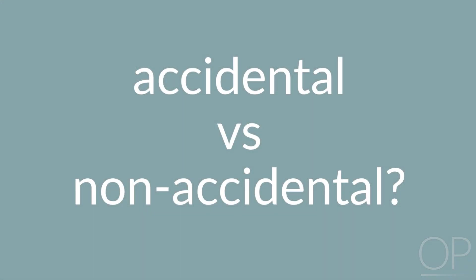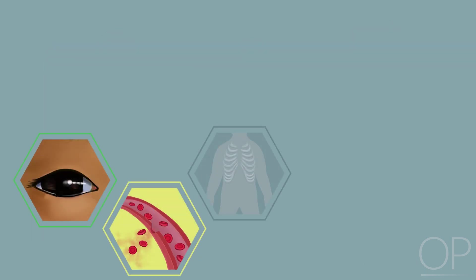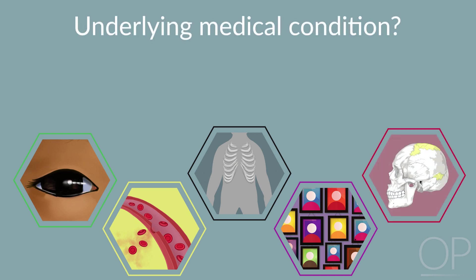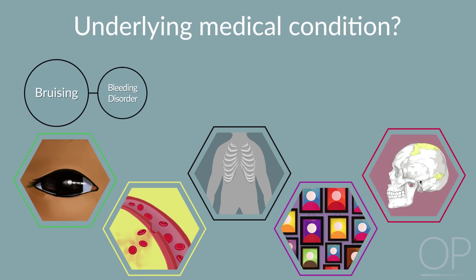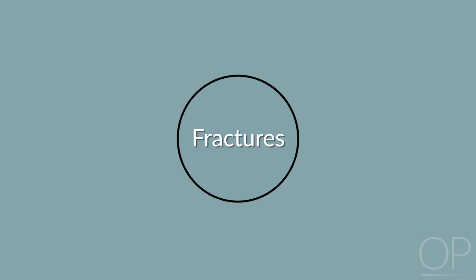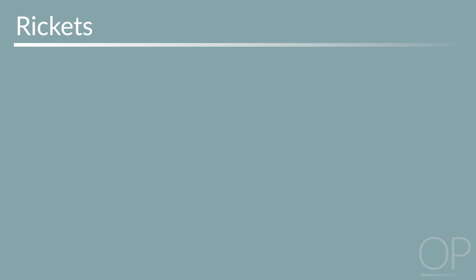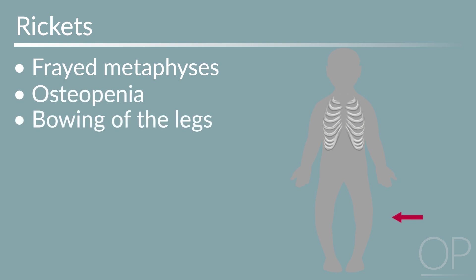Diagnosis. When creating a differential diagnosis, it is first important to consider whether the injury is accidental or non-accidental. Providers will need to determine if the history provided is sufficient to explain the injury. Given the consequences of a diagnosis of child abuse, it is also critical to determine whether there is an underlying medical condition causing similar findings. In the case of fractures, the differential may include rickets and osteogenesis imperfecta. With rickets, patients may also present with multiple fractures, but classic findings include frayed metaphyses, osteopenia, bowing of the legs, and a ricketic rosary upon palpation of the costochondral joints.